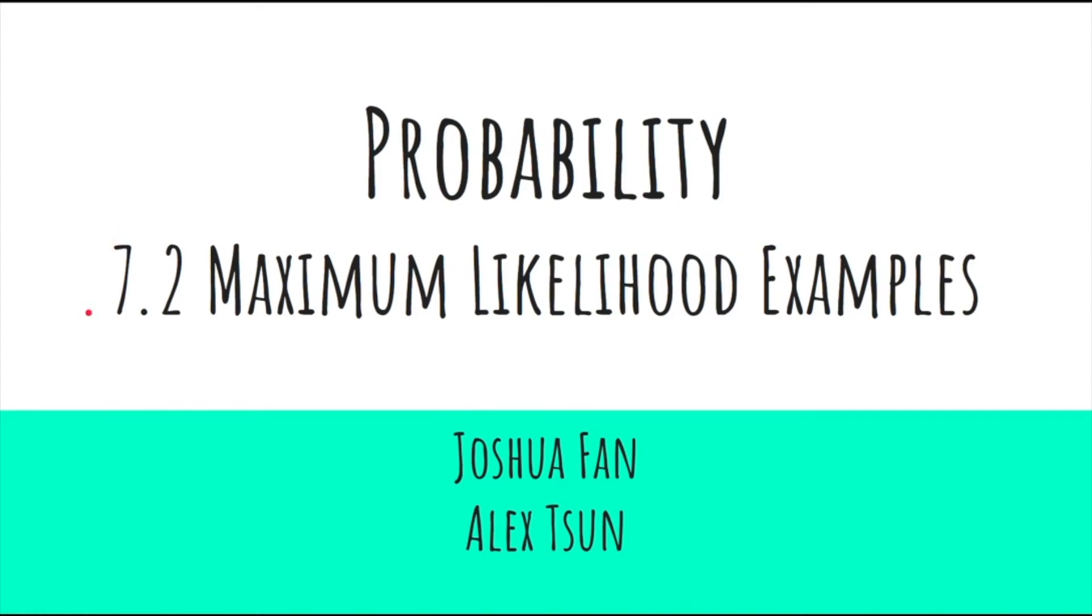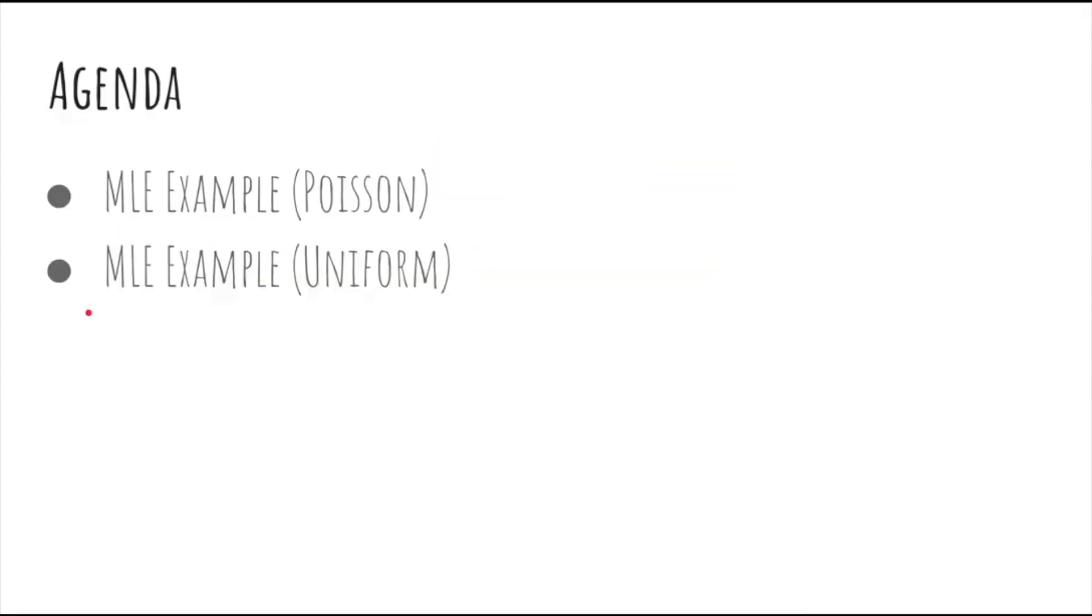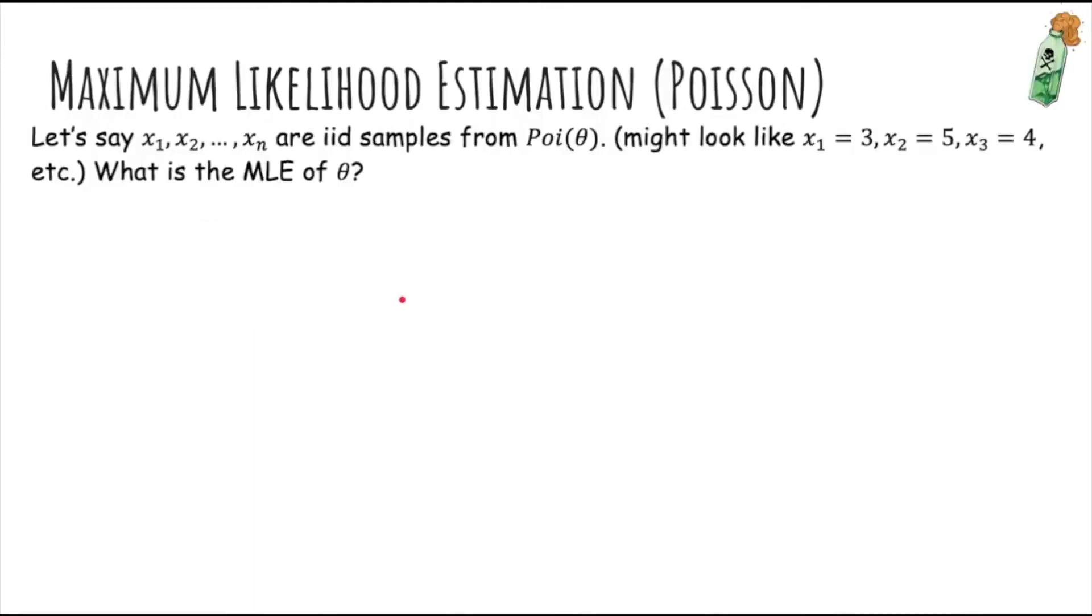Hi, in this video we'll go over some more examples of maximum likelihood estimation including the Poisson and uniform. So let's say that x1 through xn are iid samples from a Poisson distribution with parameter theta. Let's say that we have these values. So what is the maximum likelihood estimate of theta?